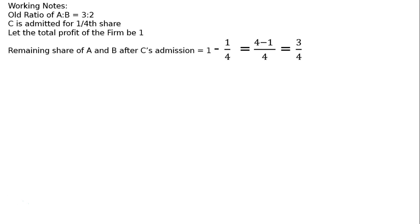That is, 1 is the share of A, B, and C, and C took away one-fourth. Hence, LCM 4, 4 minus 1 equals 3 by 4 is the remaining share of A and B to be shared among A and B in 3 to 2 ratio.